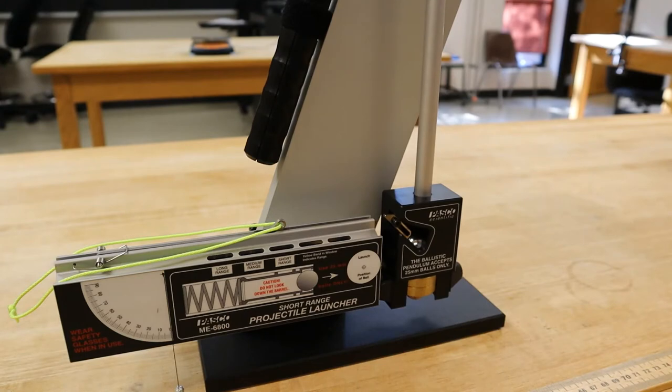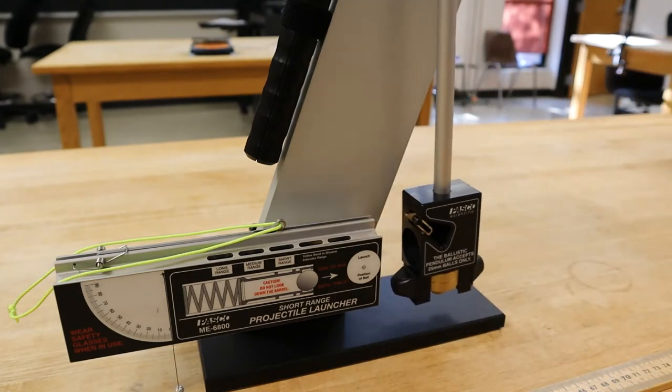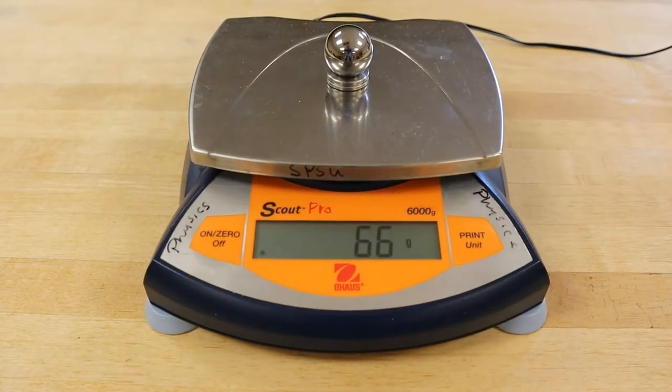In this ballistic pendulum experiment, we will begin by determining the mass of our projectile, which is this metal ball, using a common electronic balance.